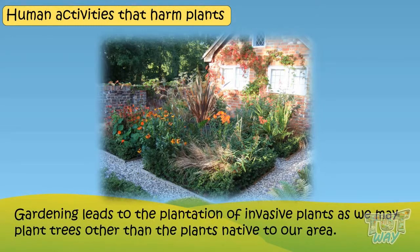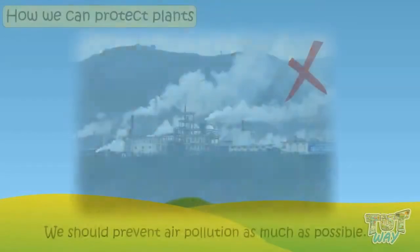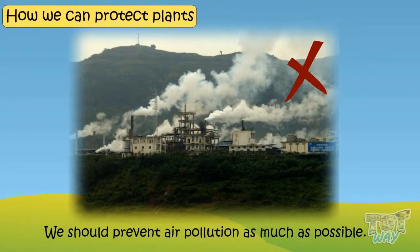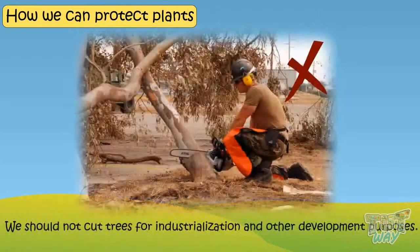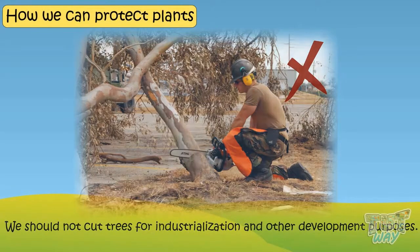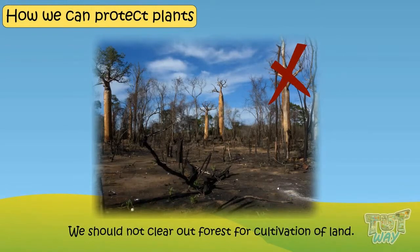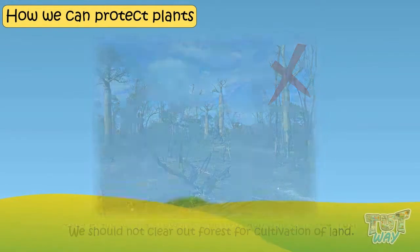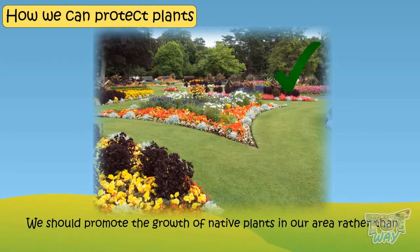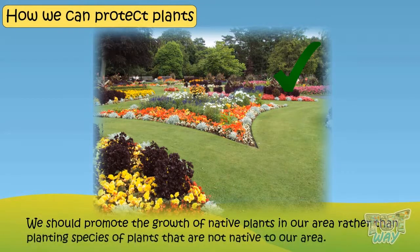We learned how our activities are disturbing the ecological balance of the Earth. So we should prevent air pollution as much as possible, not cut trees for industrialization, not clear forests for cultivation, and promote the growth of native plants in our area rather than planting non-native species.